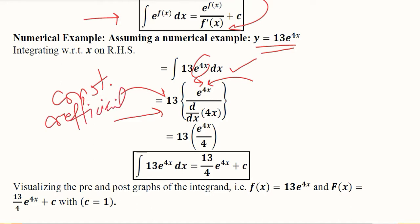We take the derivative of the exponent which is 4x and which is equal to 4, whereas this will remain as it was before and 13 will remain outside.